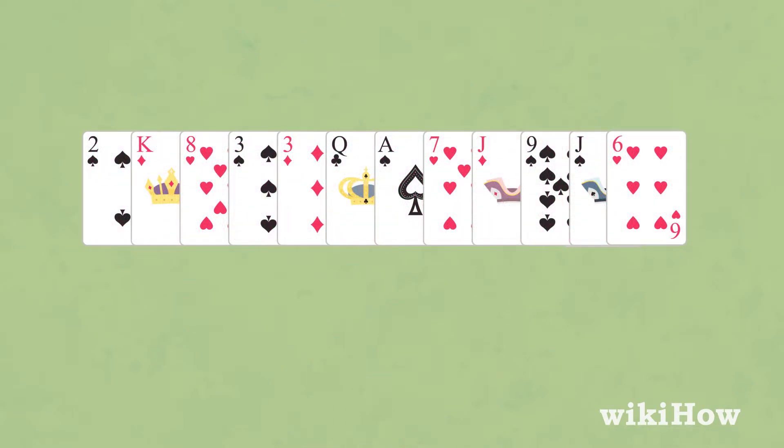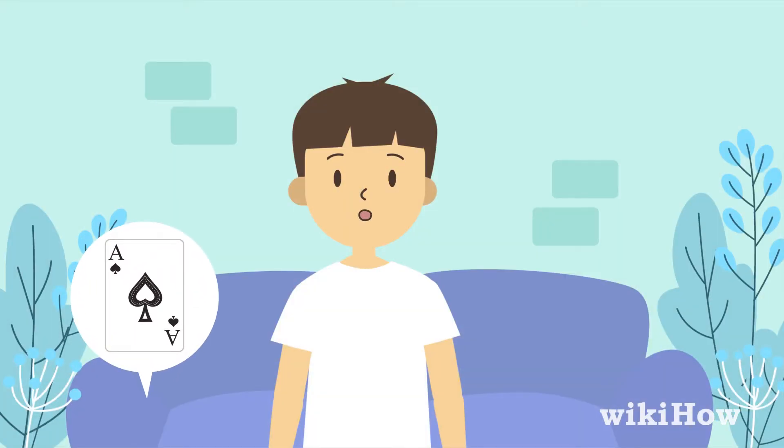Flip the deck over and search through the cards to find the one that was on the bottom of the top half of the deck. The person's card will be the card directly in front of that one. Pull that card out and announce that you've found their card.